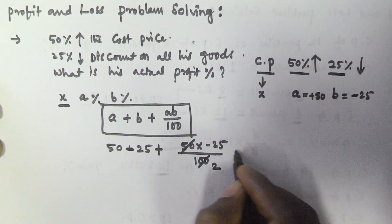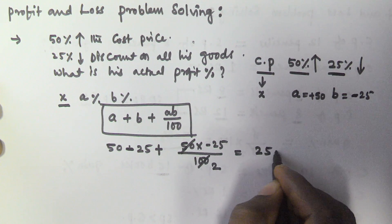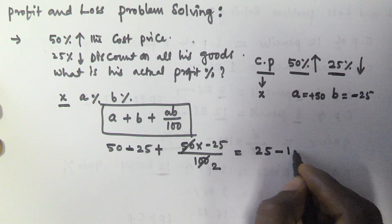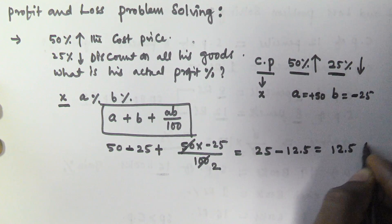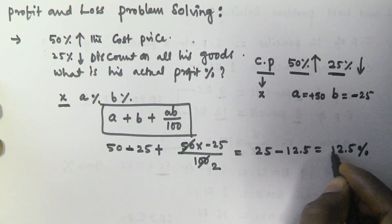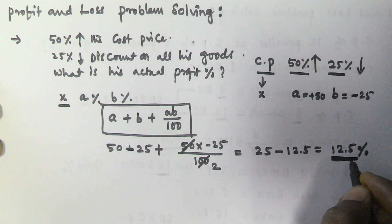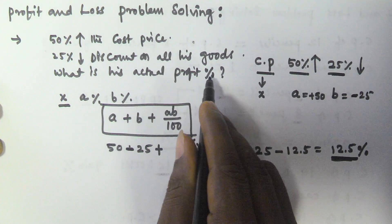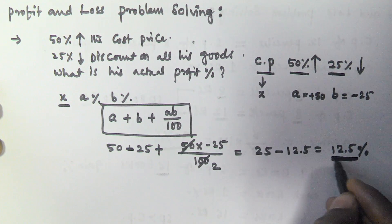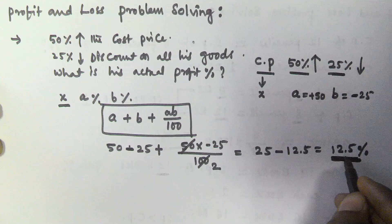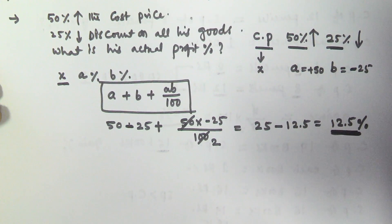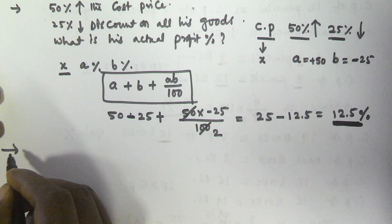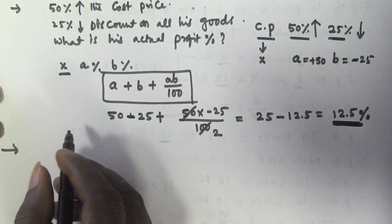So that is 50 minus 25 = 25, minus 25/2 which is 12.5, giving us 12.5 percentage. This is positive, so that means there is a gain. The actual profit or gain percentage is 12.5%.